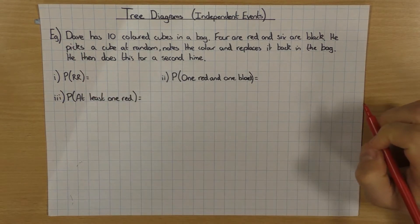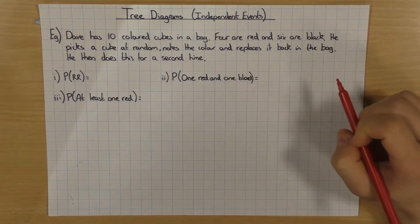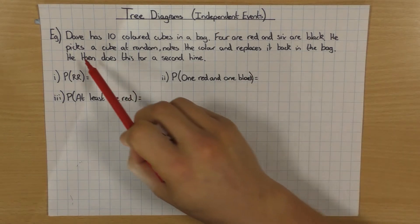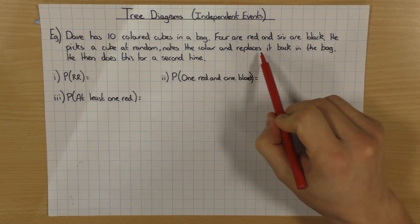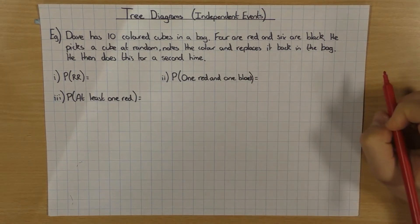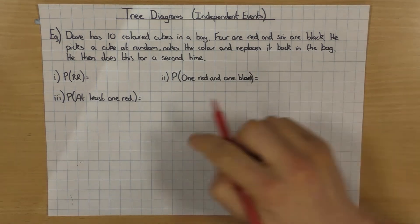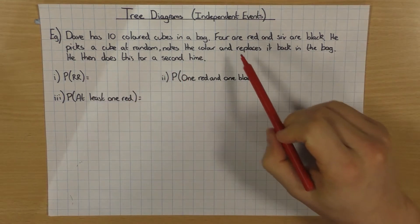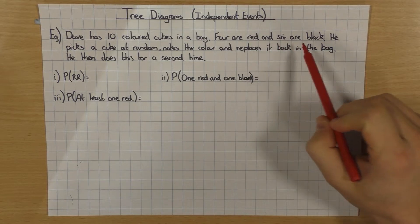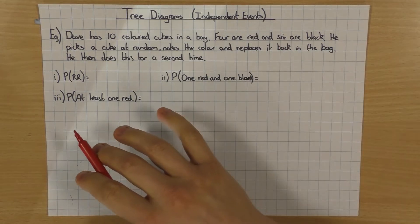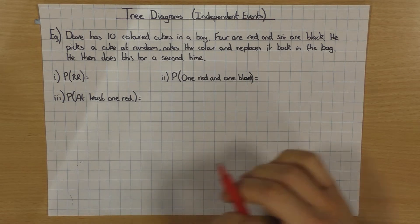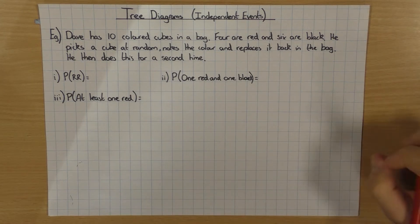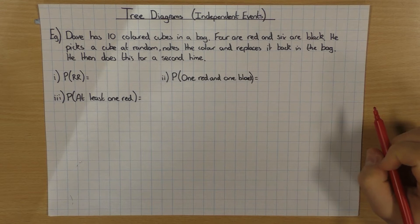For example, Dave has ten coloured cubes in a bag: four are red, six are black. He picks up a cube at random, notes the colour, and the key thing here is he replaces it. So when he puts it back in the bag and does it a second time, he's still going to have four red and six black. So the first event does not impact the second pick because he puts it back.